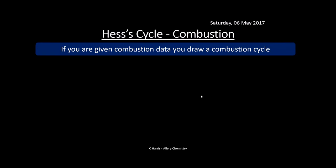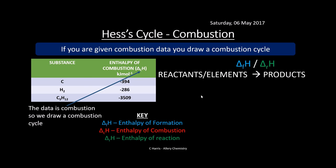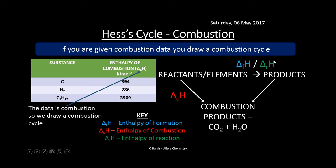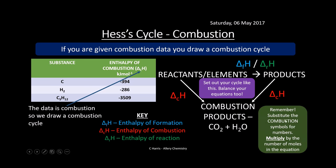Now let's look at the combustion cycle — this is a different cycle. You're looking for combustion data in what's been given to you. Combustion cycles are a little bit different: the arrows point downwards, and we always have combustion products — CO₂ and water — at the bottom. Make sure everything's balanced. When using these numbers, you're substituting for the combustion values and multiplying by the number of moles in the equation.